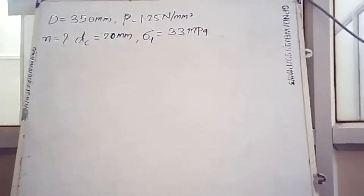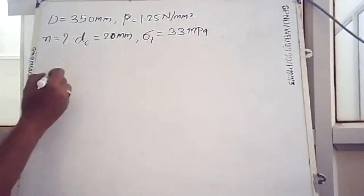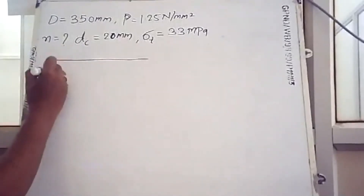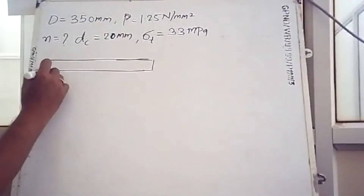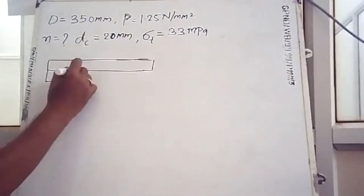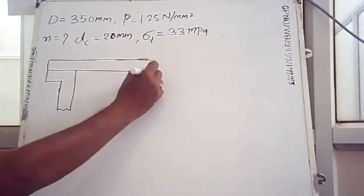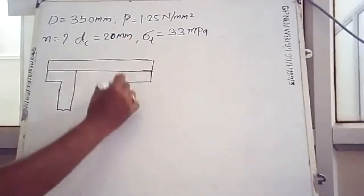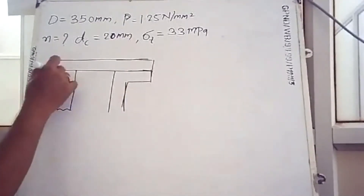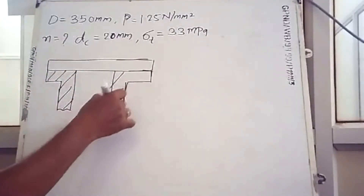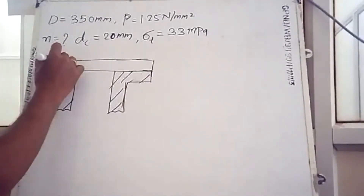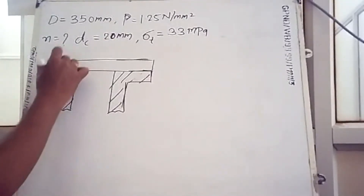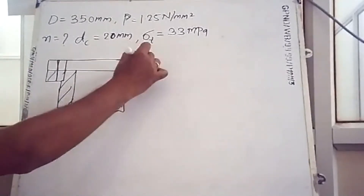In front of you is the given setup. This is a steam engine cover — a cylindrical flat cover. Here is the cylinder of our steam engine, and the cover is connected to the cylinder using some studs.